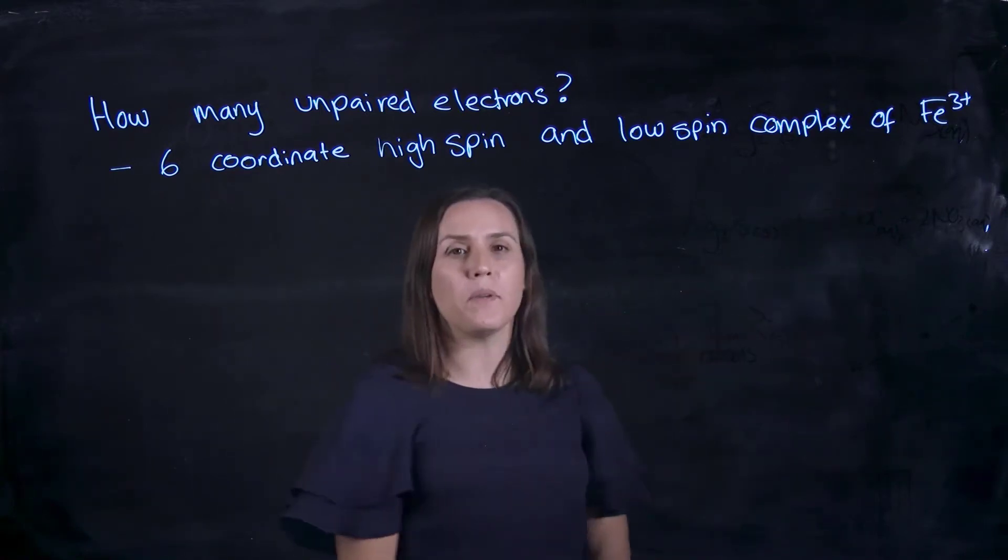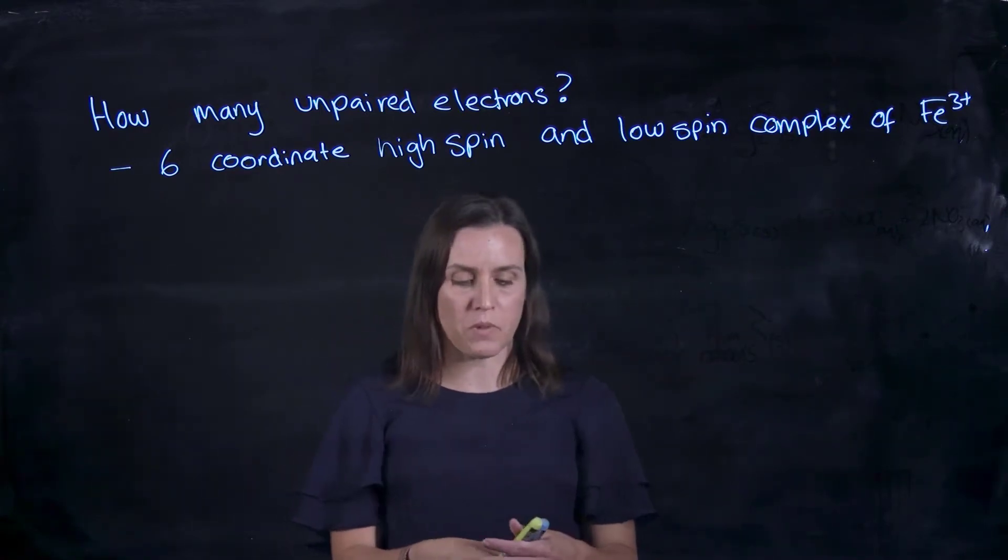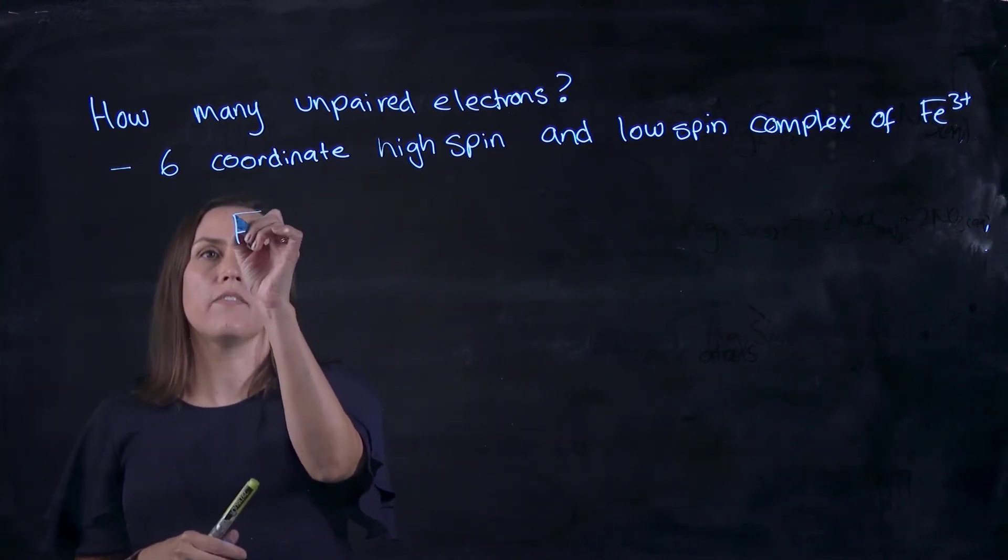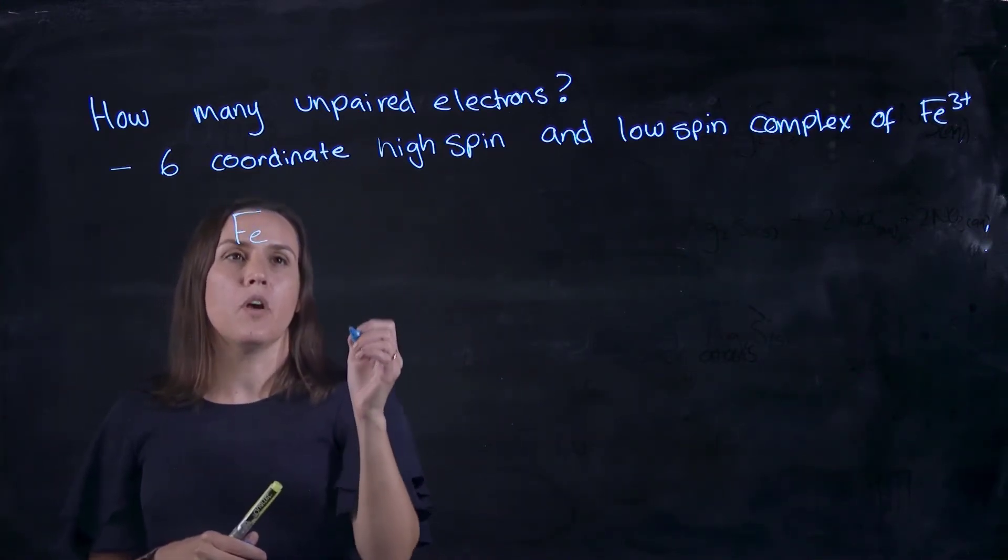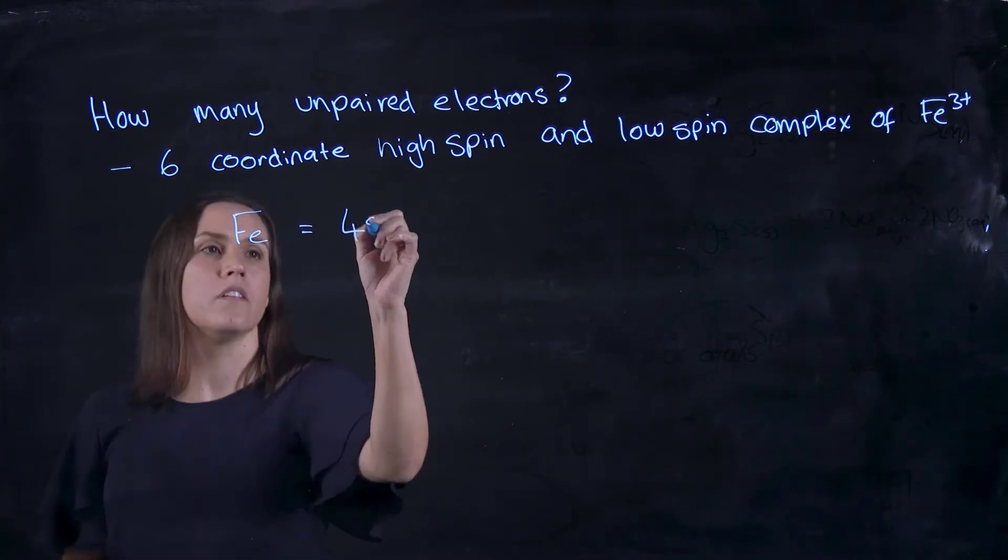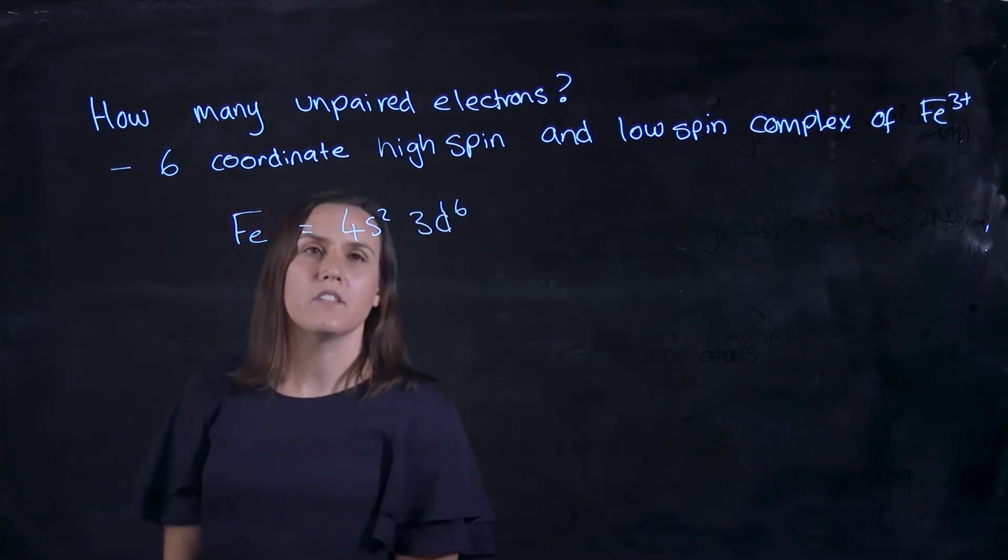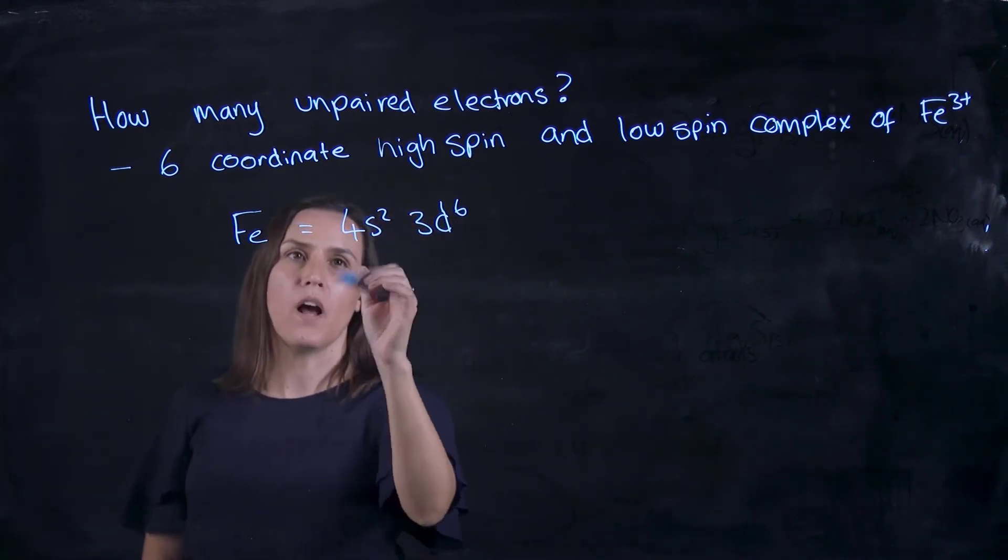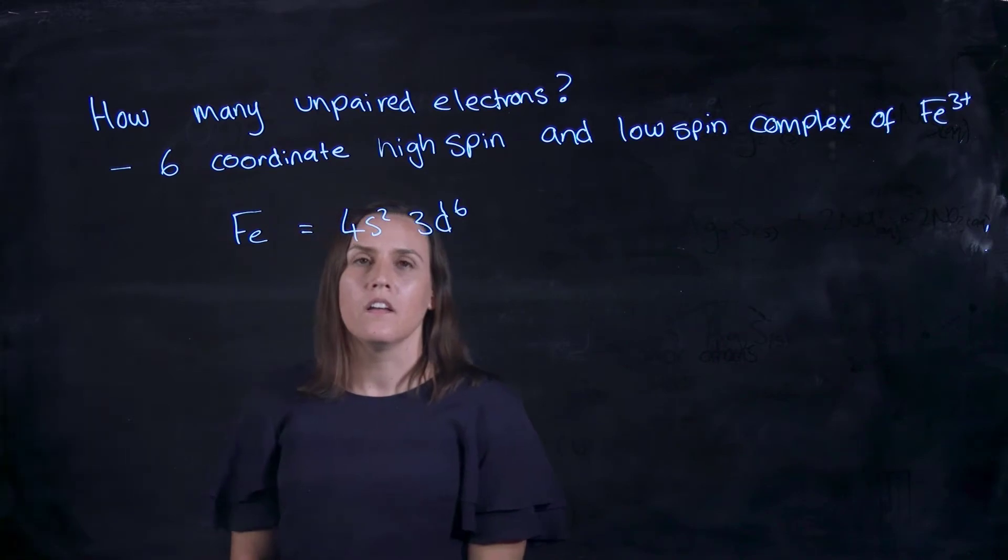So first of all, let's work out how many electrons we've got in Fe3+. If we look up iron, just neutral Fe on the periodic table, you will get 4s2, 3d6. So this is just the abbreviated one for that particular period.